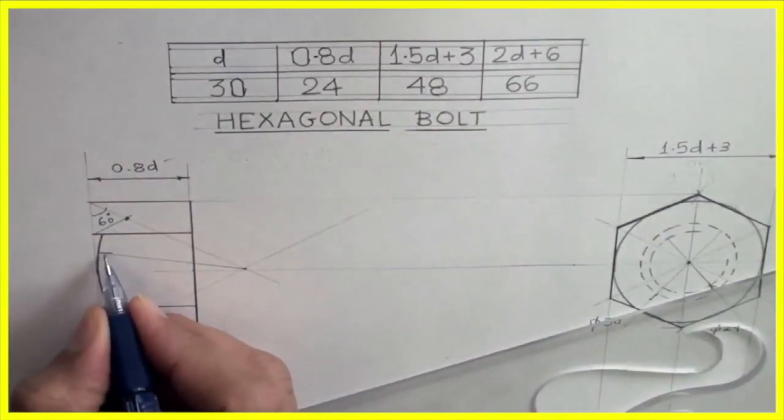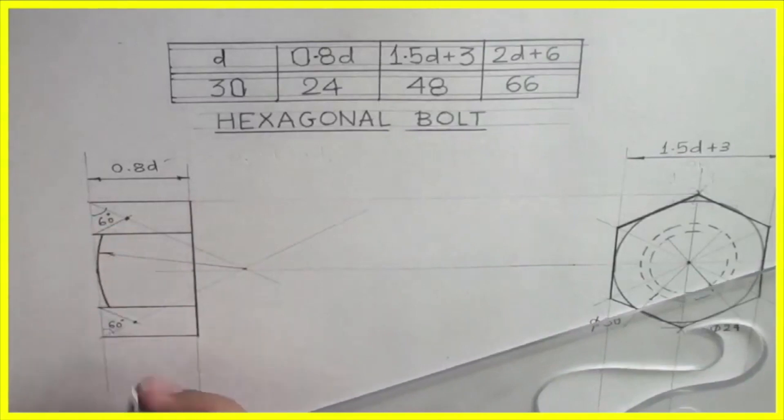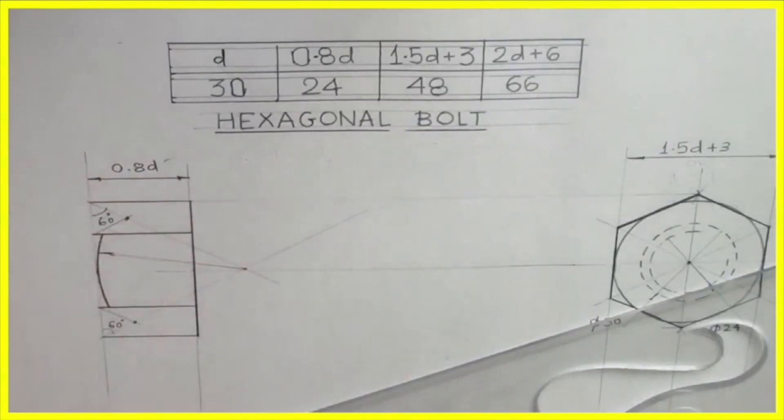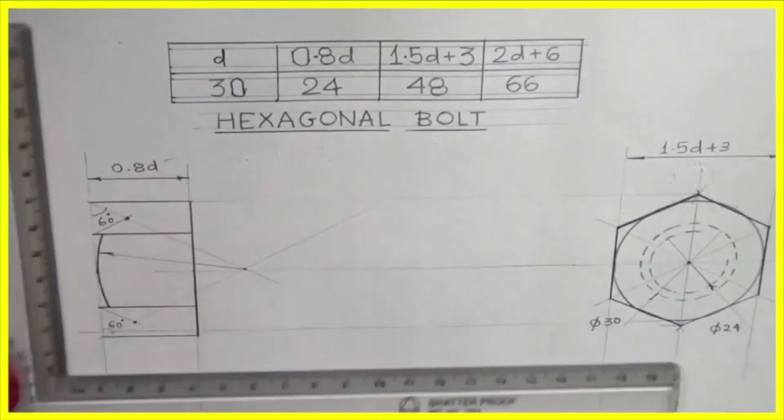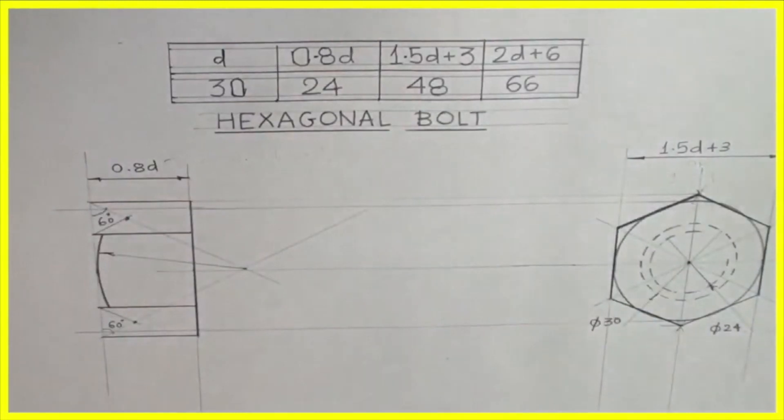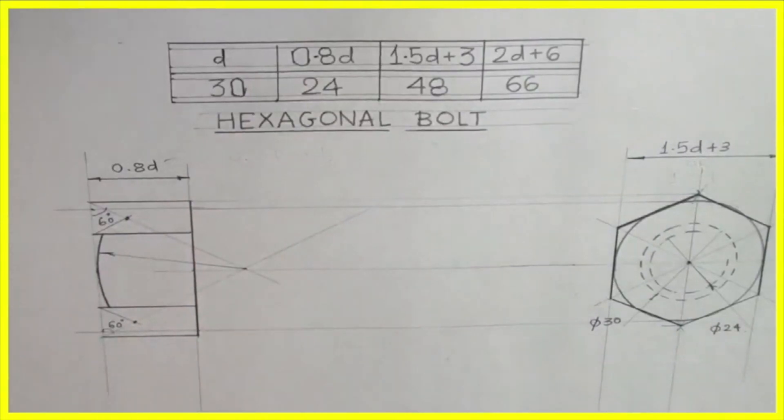This is the main radius. Now we need to draw another two radiuses. But first we will project a line from the chamfering circle. Wherever it is intersecting with the vertical line, from there we are extending. Wherever it will cut, from that point we will draw 30 degree with vertical. Same on the other side - extend and draw 30 degree with vertical.